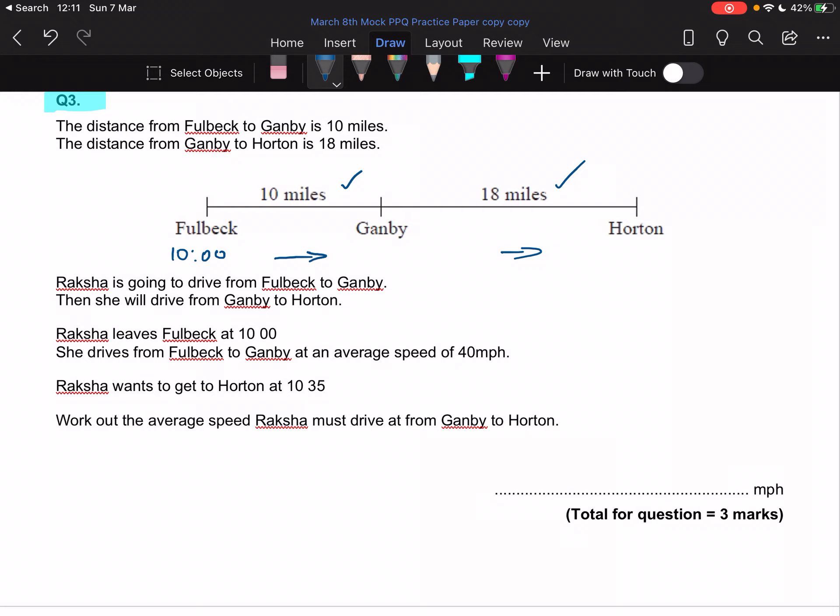She wants to get to Horton at 10:35. Work out the average speed she needs to drive from Gamby to Horton. It's a three mark question, so everything's annotated.